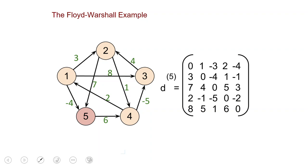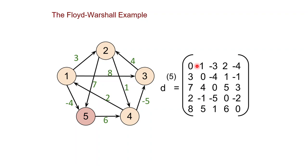Finally we compute D superscript 5, where multiple entries change. For example, the entry for node 1 to node 2 changes — we can now do a path that goes through 5: go to 5 with cost minus 4, then do 6 minus 5 plus 4, so the cost is minus 4 plus 6 minus 5 plus 4, which is just 1. This concludes the example of Floyd-Warshall.